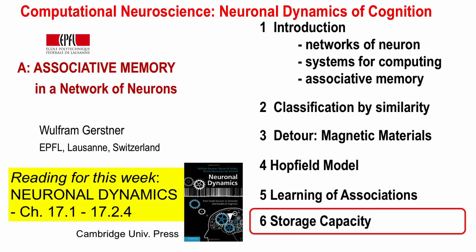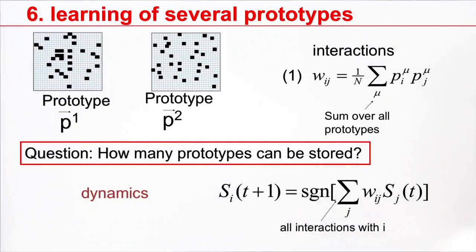Welcome back to the class Computational Neuroscience. We look again at a model of associative memory, and the question we would like to ask now is: we have seen that we can store several prototypes, but how many prototypes can really be stored?